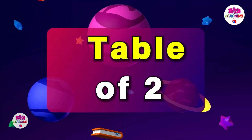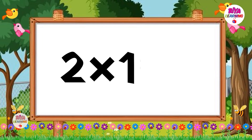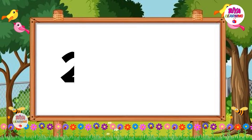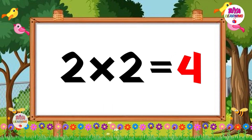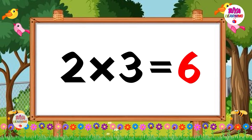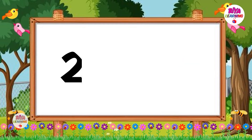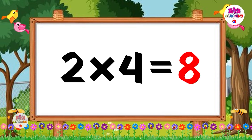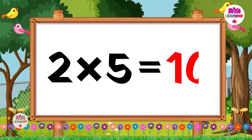Table of two. Two ones are two. Two twos are four. Two threes are six. Two fours are eight. Two fives are ten.